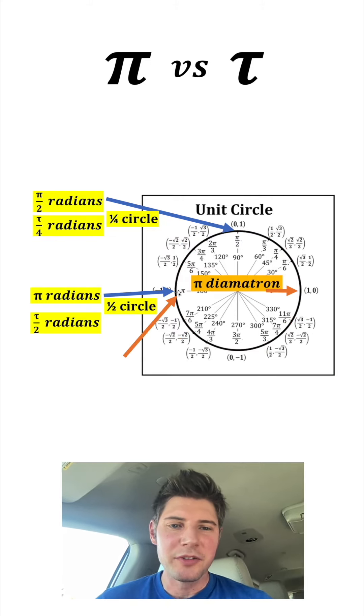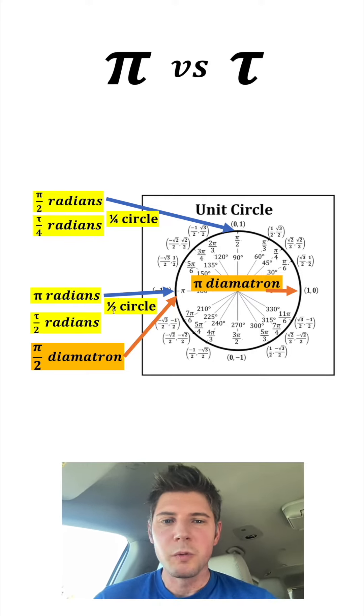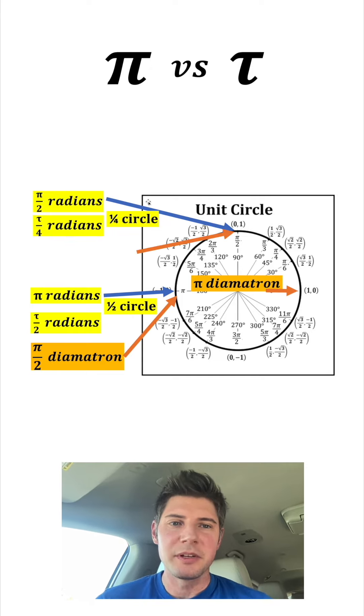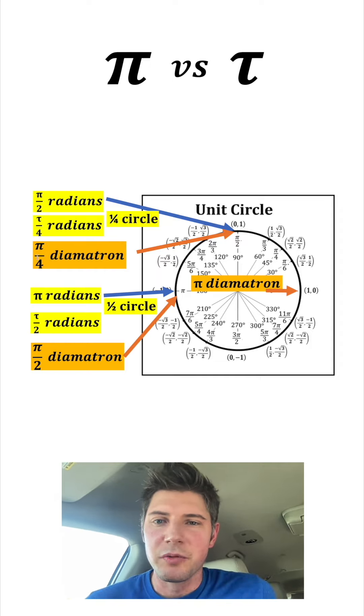Let's clean this up. And then this right here is half the circle. So that would be π/2 diametron. And now we have some symmetry involving pi. It's one half pi, one half circle. And the same thing happens up here. This would be π/4 diametron. And it's also one fourth of the circle. We have the symmetry of one fourth pi and one fourth of a circle.